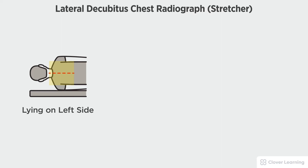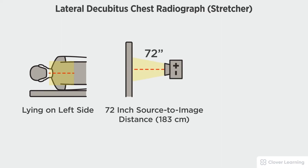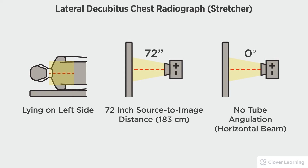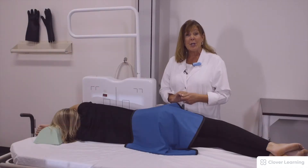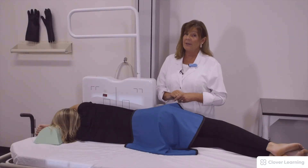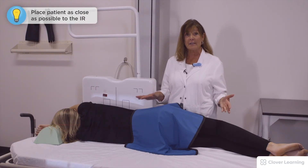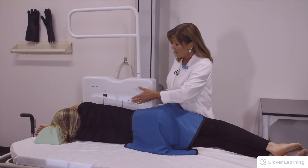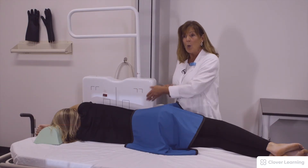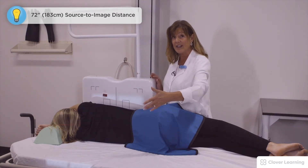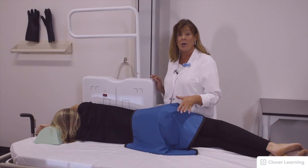In this view we will be demonstrating the lateral decubitus chest. The patient should be lying on their left side, or as dictated by pathological conditions, with a 72-inch source to image distance and a horizontal beam with no tube angulation. For a decubitus chest, our patient is unable to stand. She is on her left side on the stretcher, the stretcher is locked, and we have her rolled up as close as she can get to the IR. We have a 72-inch SID and no angle on the x-ray tube.